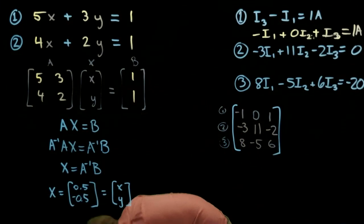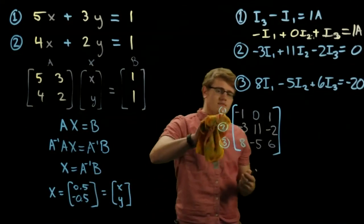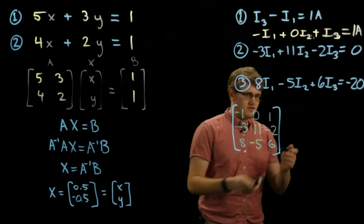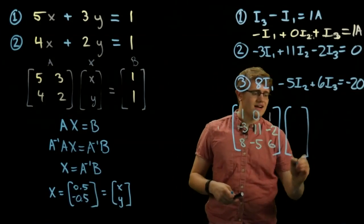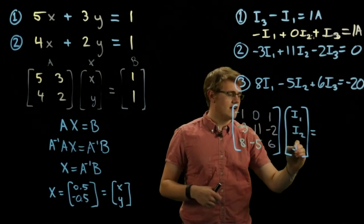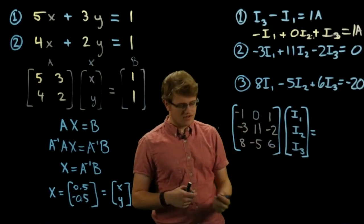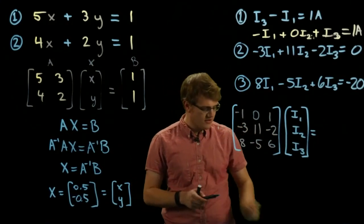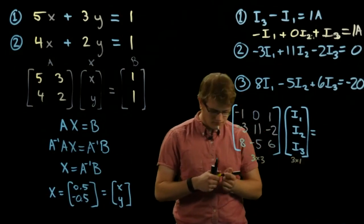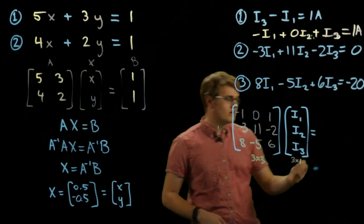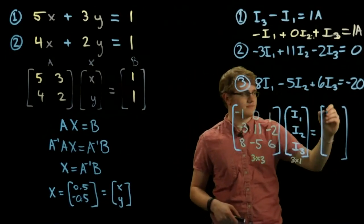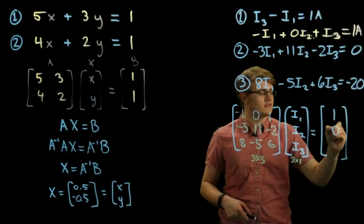For the variable matrix, it's going to be the same as before — we go down the list: I1, I2, and I3. That's going to be a 3 by 1 matrix. The coefficient matrix A is a 3 by 3. And what is the B matrix equal to? It's going to have 1 amp, 0, and negative 20 amps — so 1, 0, and negative 20.